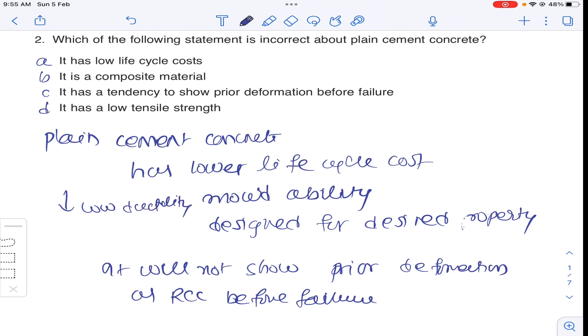And it has low ductility. That is it can break very easily. It has a tendency to show pre-air deformation. That is it will not show pre-air deformation before failure. So it is incorrect statement regarding plain cement concrete. So answer C for question number 2.